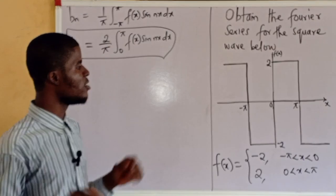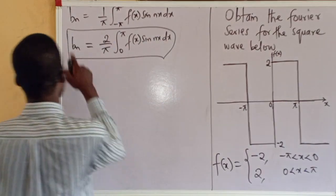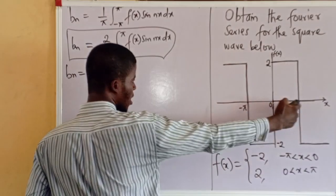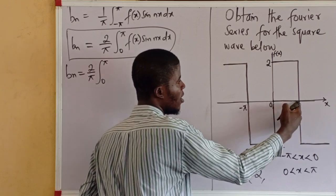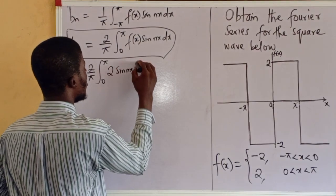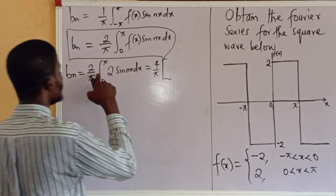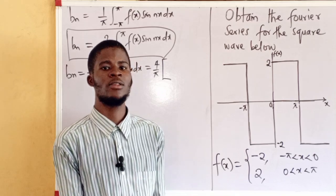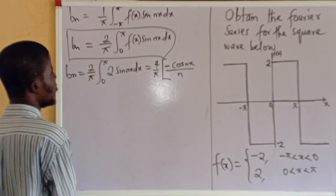That means we are going to take the integral from 0 to pi alone. So b sub n is equal to 2 over pi times the integral from 0 to pi. From 0 to pi, f of x is 2, so we have 2 sine nx dx. The 2 can come out, giving 4 over pi. The integral of sine nx dx gives negative cosine nx over n, so we have minus cosine nx over n, integrating from 0 to pi.